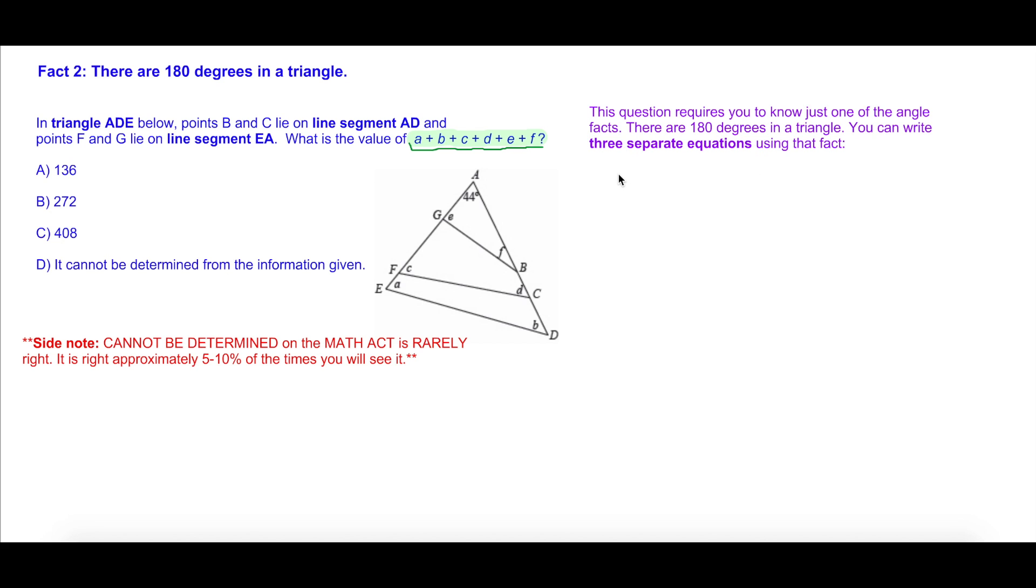Using that fact alone, you can write three separate equations. Number one: 44° + E + F = 180. Number two: 44 + C + D = 180. Number three: 44 + A + B = 180. Now you can do something real fancy by adding up all the equations to get 132 + E + F + C + D + A + B = 540. And then you can just subtract out 132 to get that all of these shenanigans are simply equal to 408. That's it, folks. Not so bad.